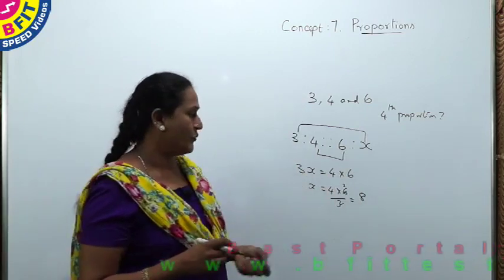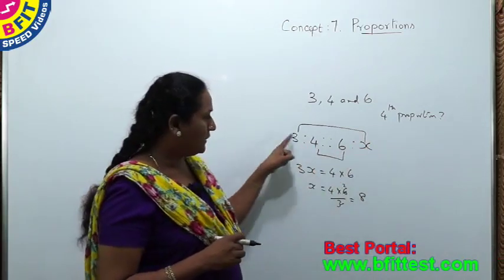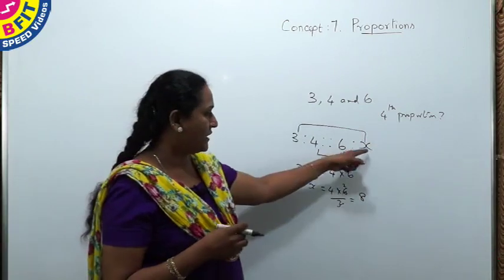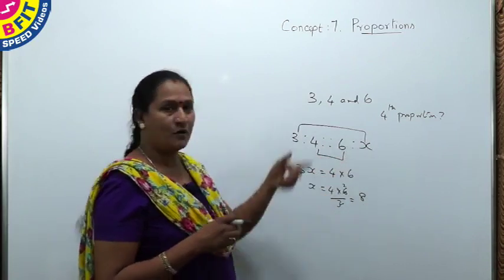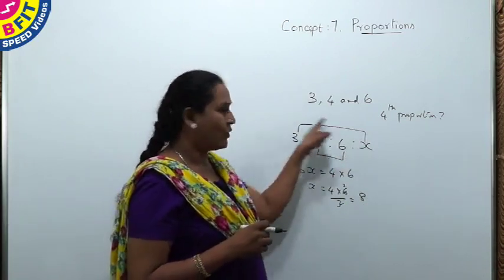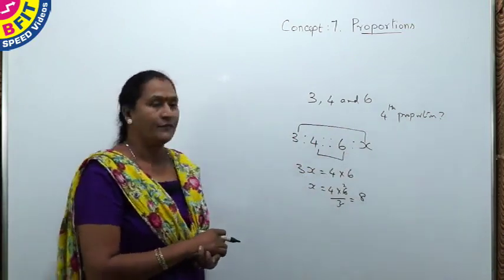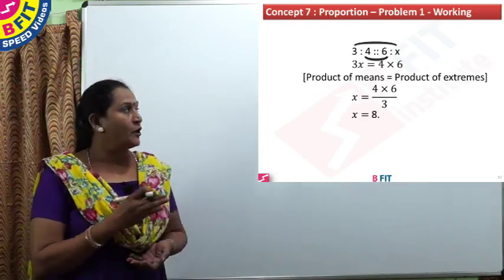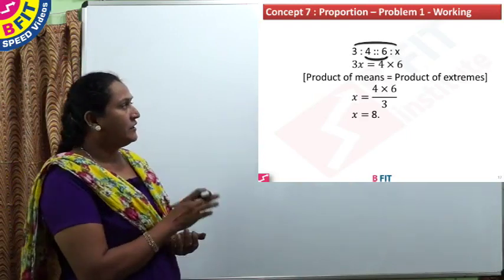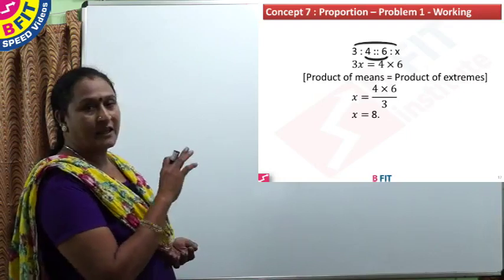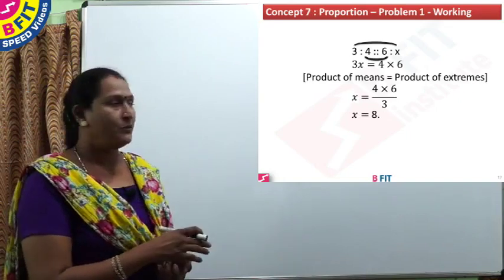So the fourth proportion is 8. That is, 3:4::6:8. We can verify: 3×2=6 and 4×2=8, confirming the ratio holds. Writing the numbers without changing the order as 3:4::6:x, and taking x for the fourth place, 3x = 4×6, giving x = 8.